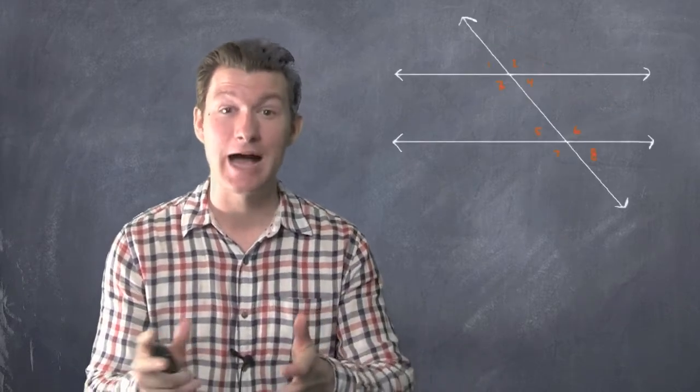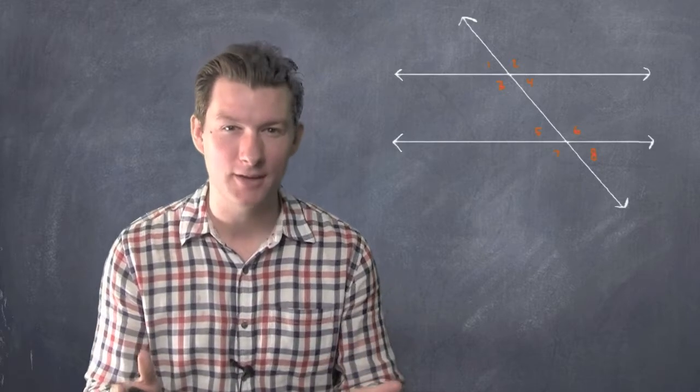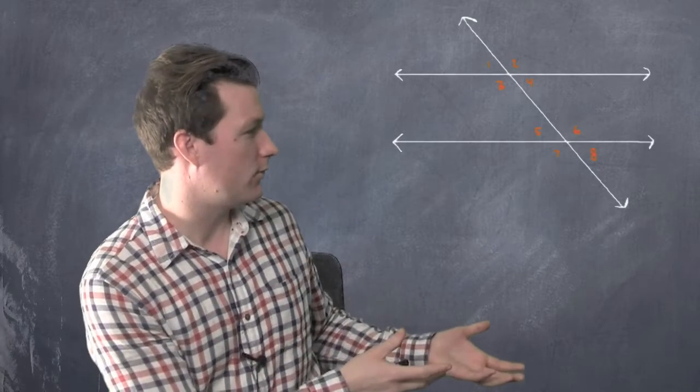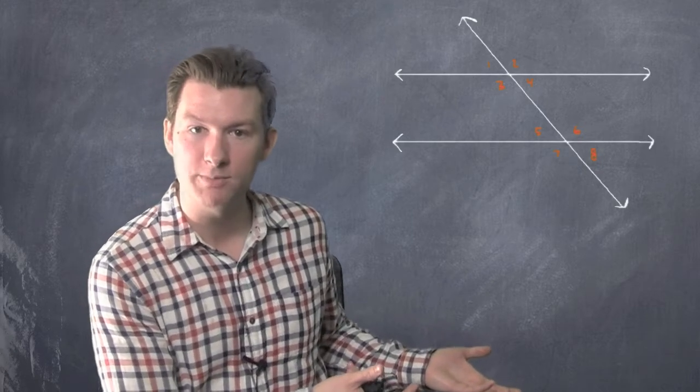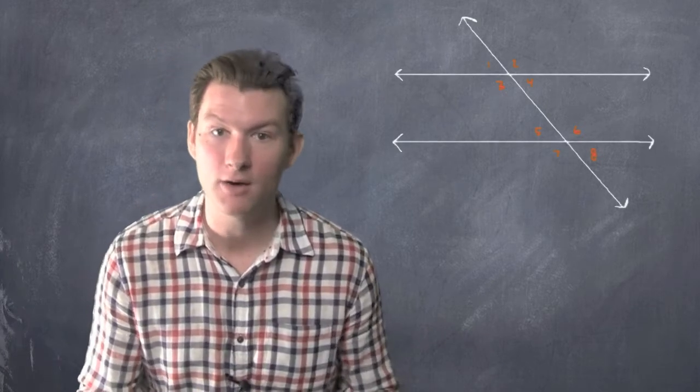Angle one is top left. So what's the top left angle from the bottom set of four? Well, the top left there is angle five. So one and five are corresponding and one and five are equal.